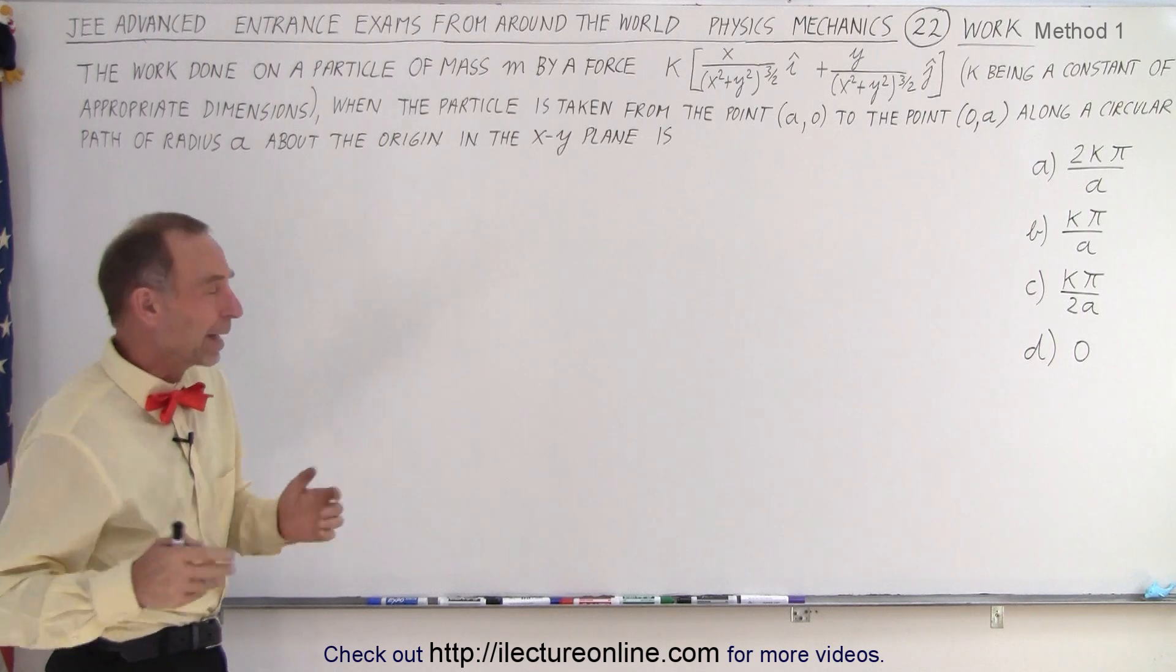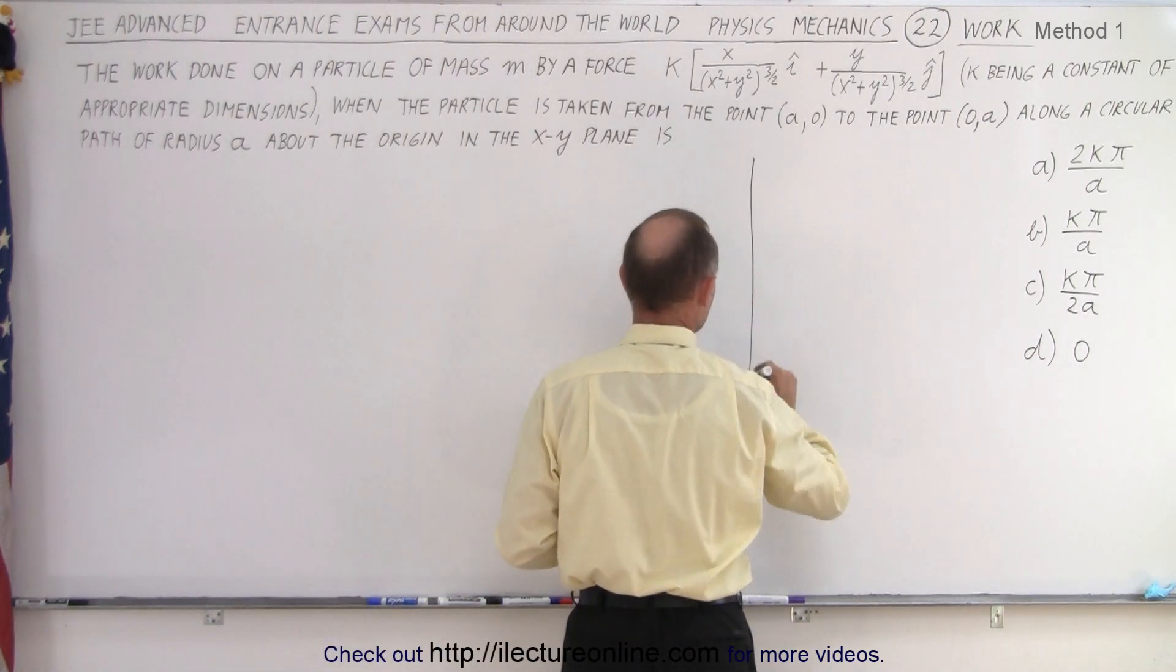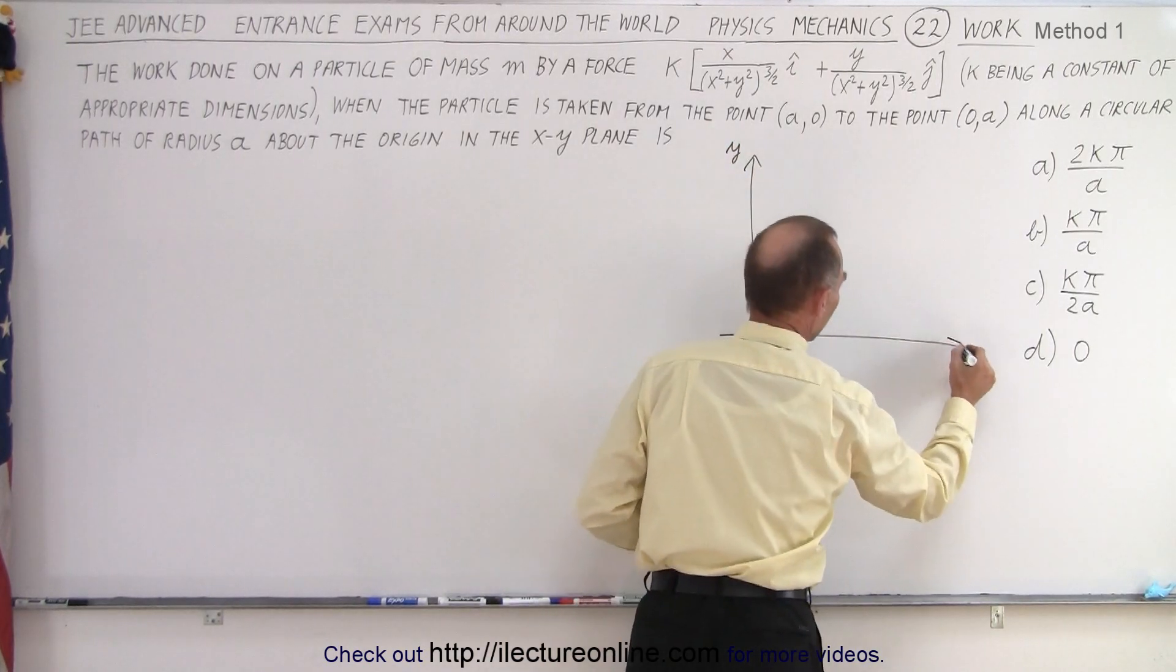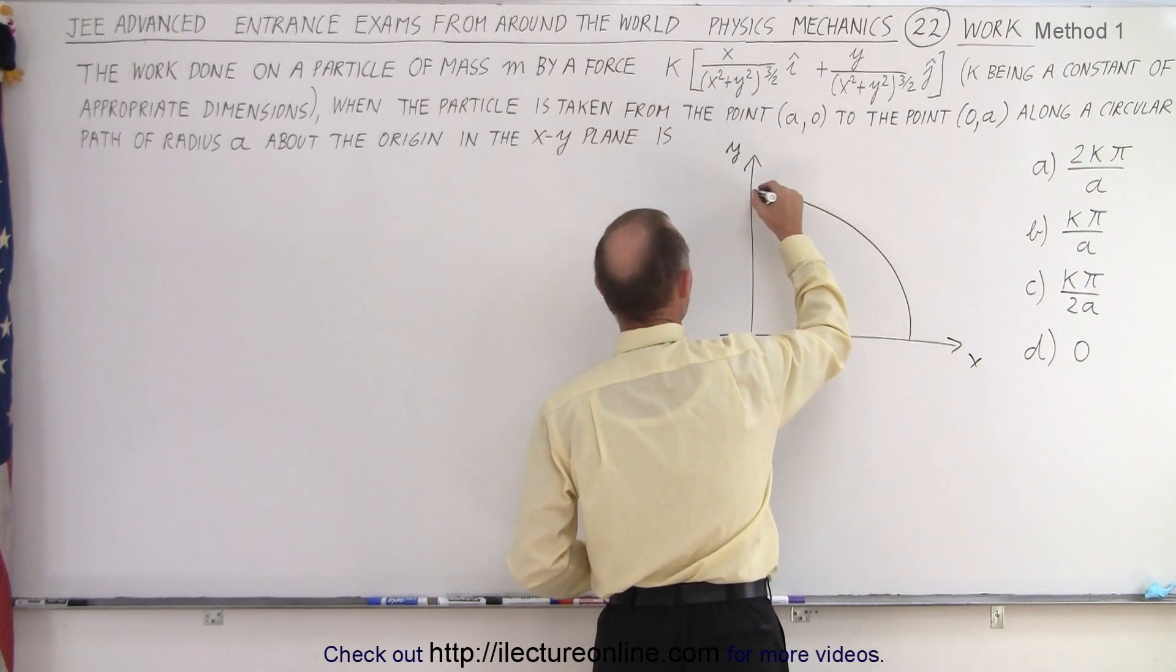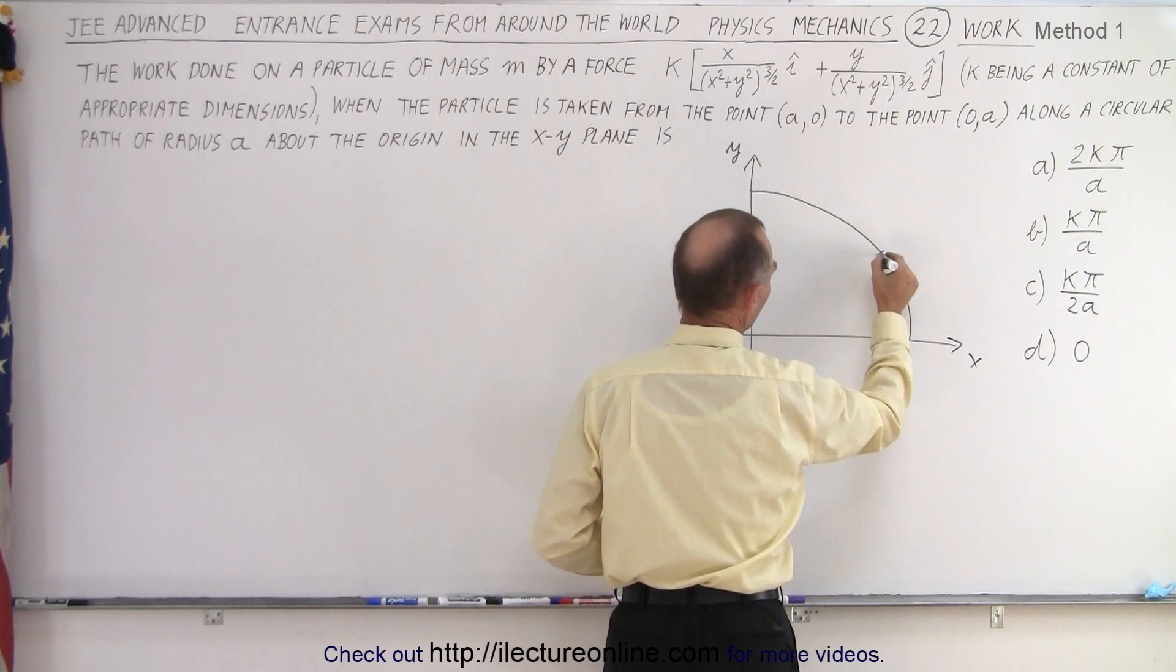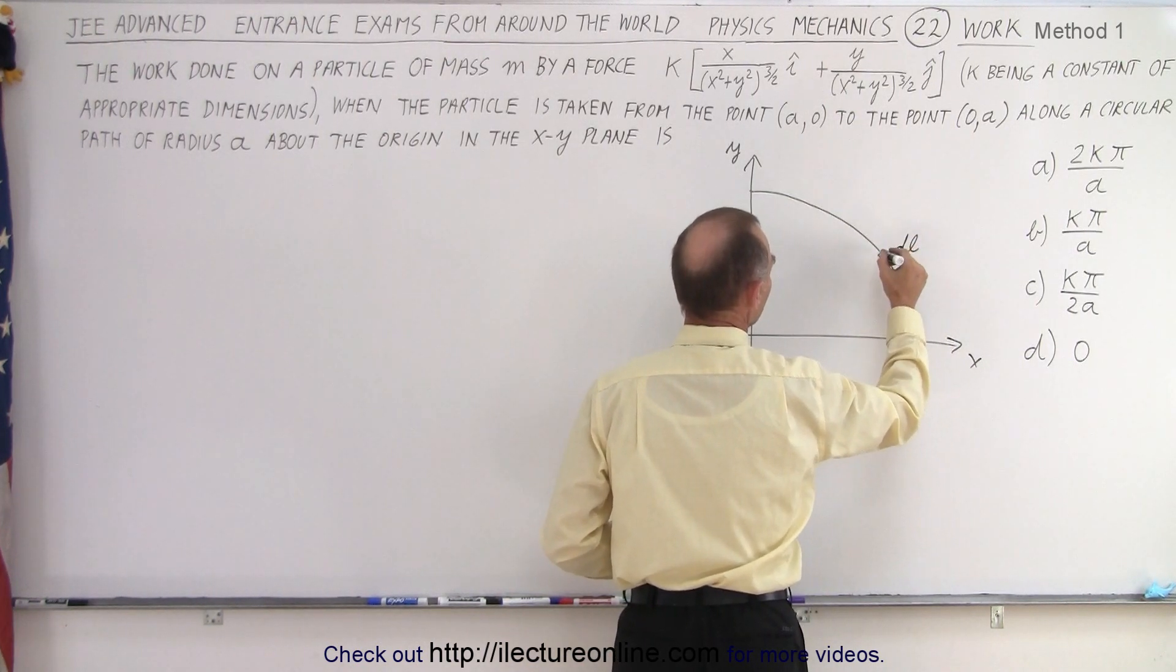So let's make a schematic so we can take a look at it. We have an XY plane. Here's the Y axis, X axis. Here's the circular path of radius A. Let's take a small little point on here. Let's call that the DL.